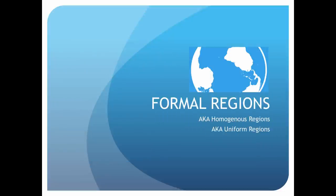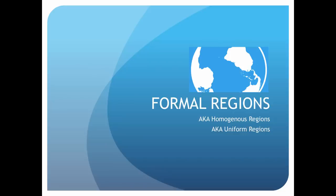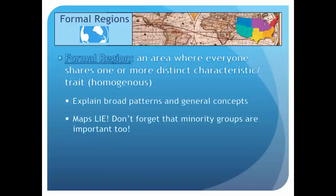Our first type of region is a formal region — also known as a homogeneous or uniform region. A formal region is an area where everyone shares one or more distinct characteristic or trait. Geographers use formal regions to help explain broad patterns such as religion or level of development. They are often very general in nature.